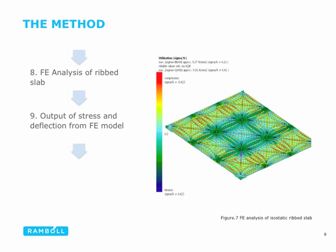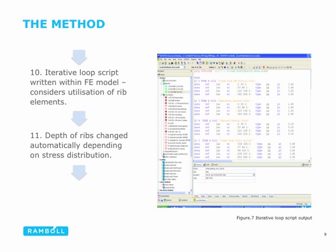That 3D model is then exported into our analysis software, where we run another FE analysis — the results are on the right. The stress and deflections are outputted, and we then have an iteration loop, scripted within the FE model, which considers the utilisation of all the rib elements and automatically changes their depth depending on the stress distribution. It runs over quite a few cycles until it reaches what we think is the optimum distribution of depth throughout the floor plate.